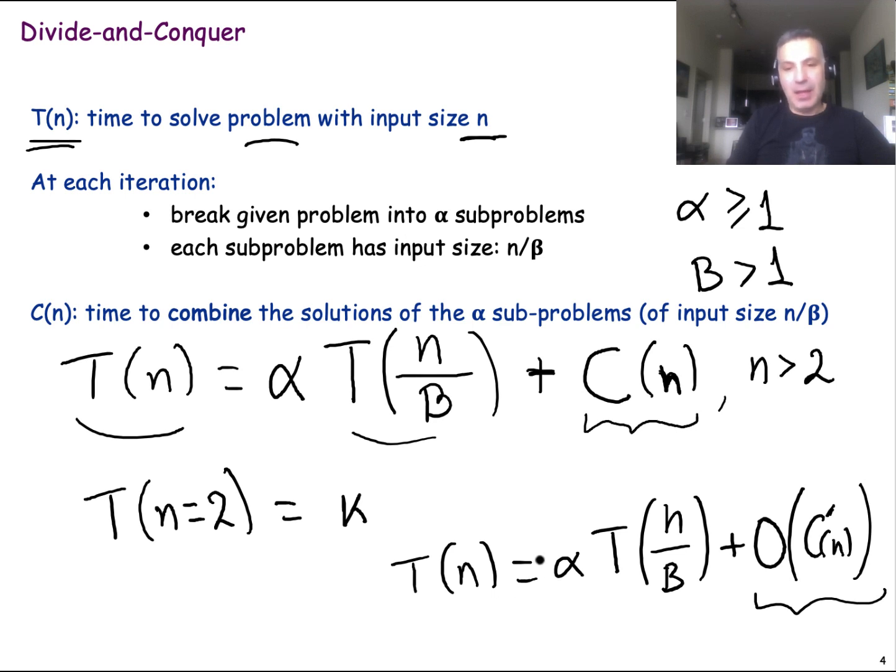Additionally, sometimes we will not have an equality here. Or sometimes we will have an inequality, meaning that this is just an upper bound of the running time for an input size of problem n. Of course, we will try to have upper bounds that are tight.